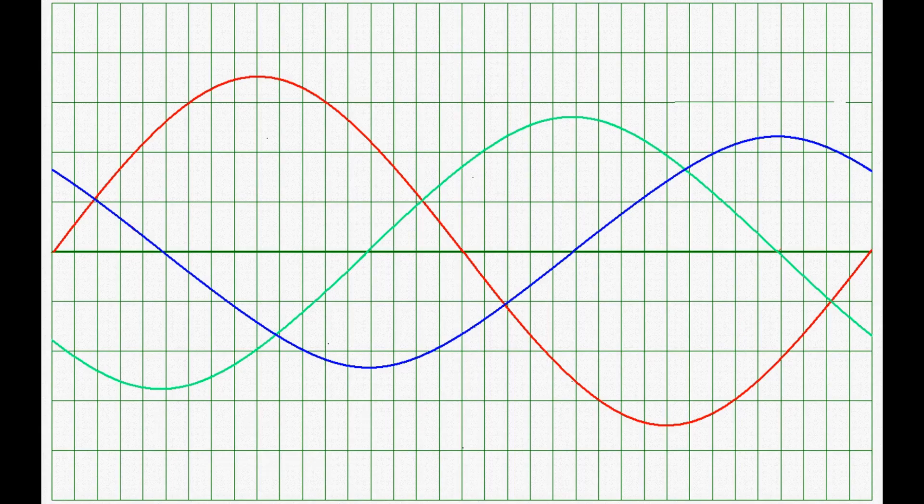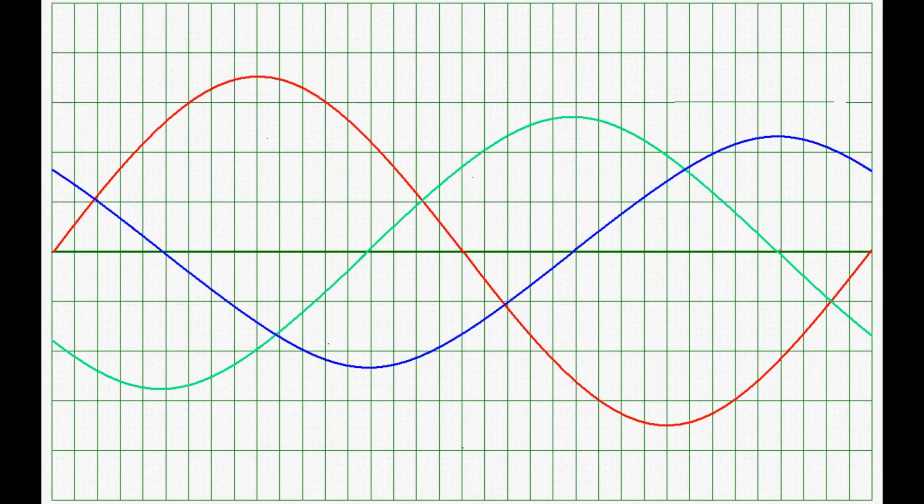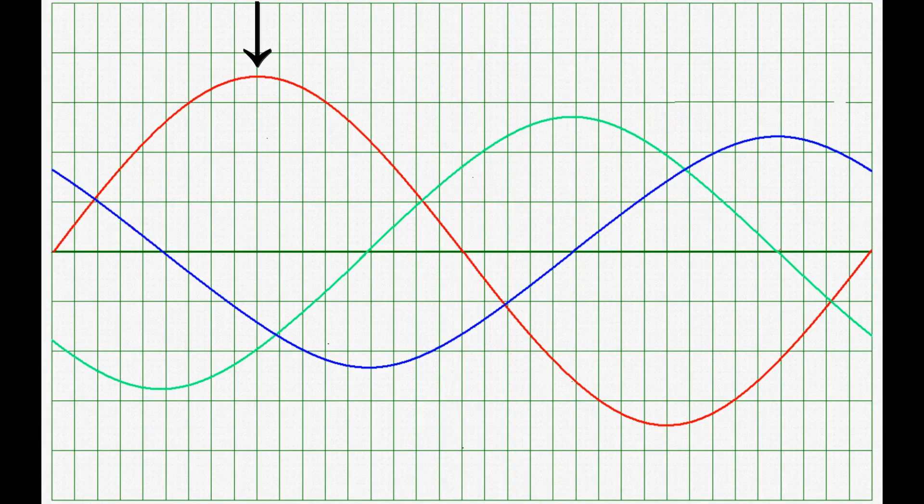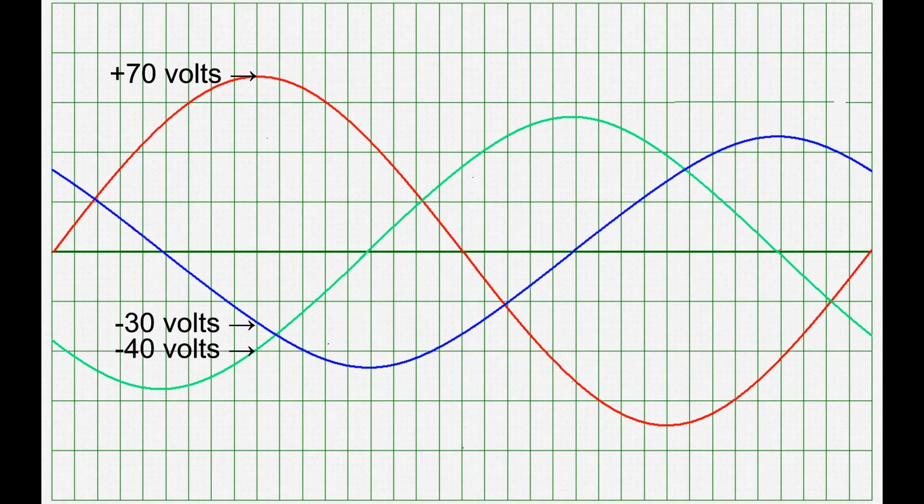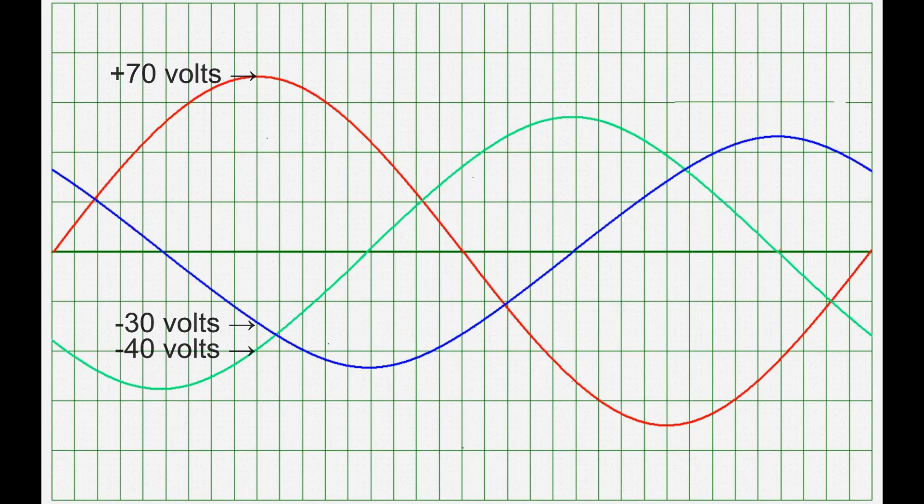If Kirchhoff's voltage law works with this circuit, the voltages should add up to zero at any particular point in time. So let's take a look at some points in time and see. Let's look at the point in time where the source voltage peaks. Here the source voltage is 70 volts, the capacitor voltage is minus 30 volts, and the resistor voltage is minus 40 volts. 70 minus 30 minus 40 equals zero.